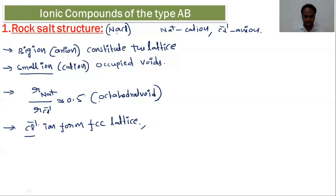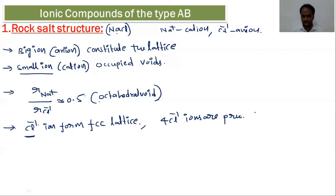If Cl⁻ ions form an FCC lattice, the number of Cl⁻ ions per unit cell is four. That is, from 8 corners: 8 × (1/8) = 1, and from 6 face centers: 6 × (1/2) = 3, giving a total of four Cl⁻ ions per unit cell.